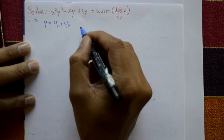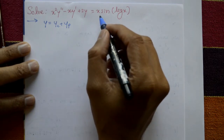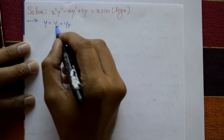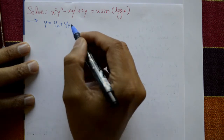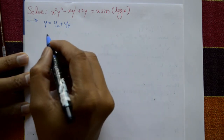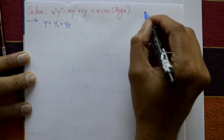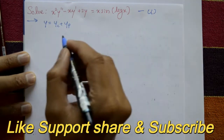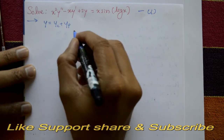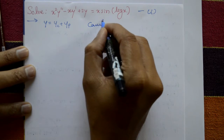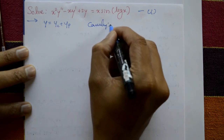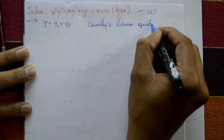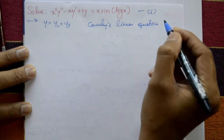Before solving, we use Cauchy's linear equation steps: first find the complementary function, then last is the particular integral. Call the given equation number 1. This is a Cauchy's linear equation.